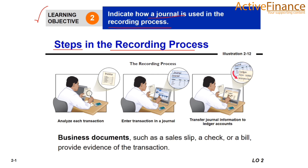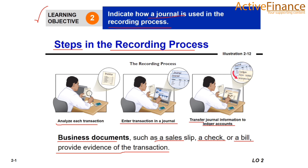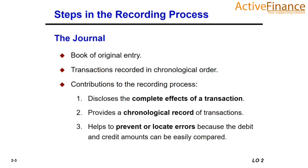Practically, businesses use three steps in the recording process. Step one is to analyze each business transaction. The recording process begins with the transaction, which involves business documents such as a sale, a receipt, a check, or a bill — these serve as transaction evidence. We then determine the business transaction's effect on specific accounts. Once analyzed, we enter the transaction in a journal, and finally transfer the journal information to the accounts.